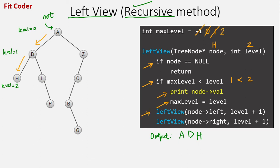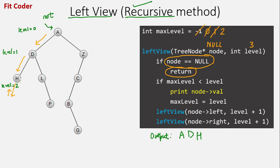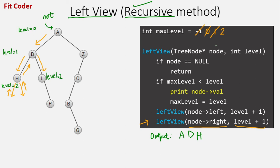We call left_view with the left of H and level 3, but left of H is null, so we return. Then we call for the right of H, which is also null, so this function also returns. The function called to H ends and control goes back to D. For D, we now go in the right direction to L at level 2. Node is L, level is 2. We check if it is null, then compare max_level with level: max_level is 2 and level is 2, so this condition is not true.